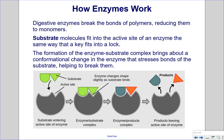In this example, we see a substrate represented by a triangle and a semi-circular shape next to it. It binds into the active site, which is complementary in shape to the substrate — it fits in like a lock and key. When the substrate is broken down, we have two smaller products being released.